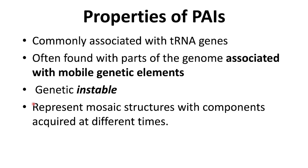Apart from these, pathogenicity islands are commonly associated with transfer RNA genes and often they are found with parts of the genome associated with mobile genetic elements. This makes the transfer of entire pathogenicity islands from one member to another very easy.